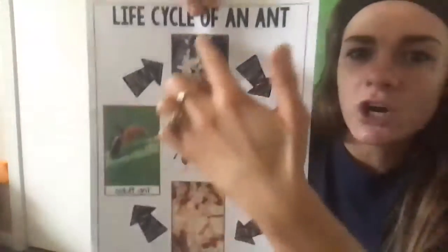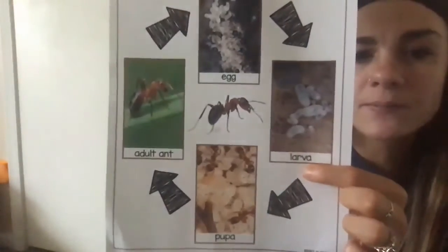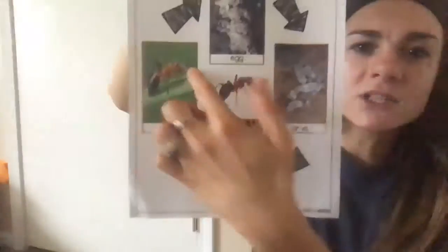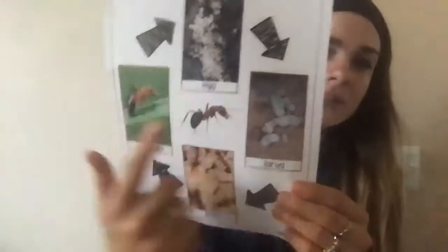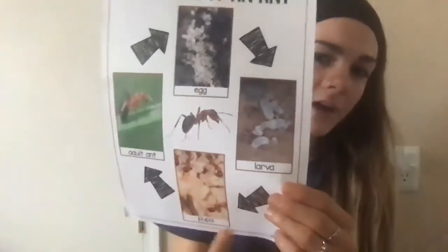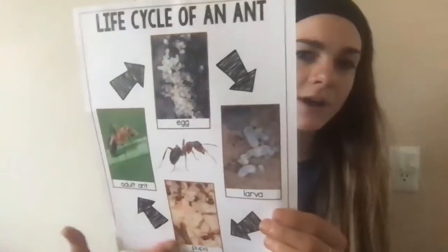Now I'm going to show you the ant life cycle. First it's an egg — they start as an egg. Then they are larva. Then they turn into the pupa. And then it becomes an adult ant. So: egg, larva, pupa, adult ant — that is the life cycle of an ant.